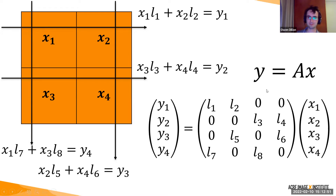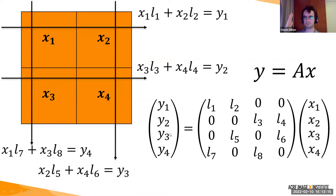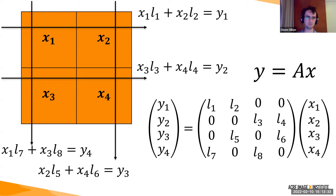We can express this all as a linear equation: measured data y equals A times x. x is a vector of all unknown attenuations; A is the forward projection matrix, made of path lengths inside each pixel region — we can derive A from our known geometry. Because this is just a linear equation, we can solve it using standard linear algebra methods, even just high school linear algebra for a system of linear equations.